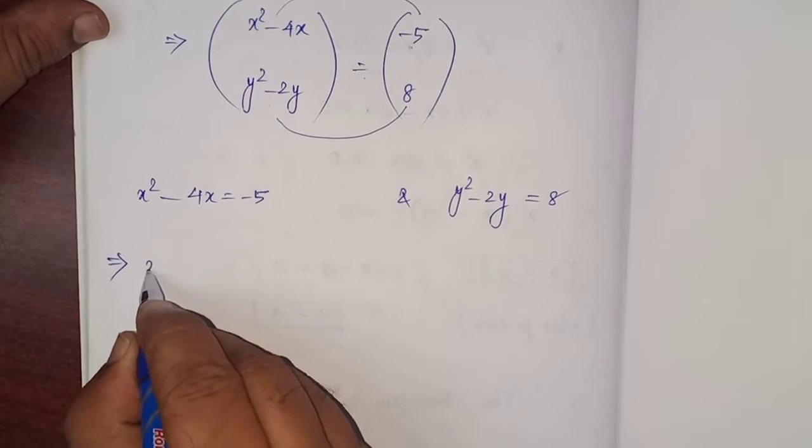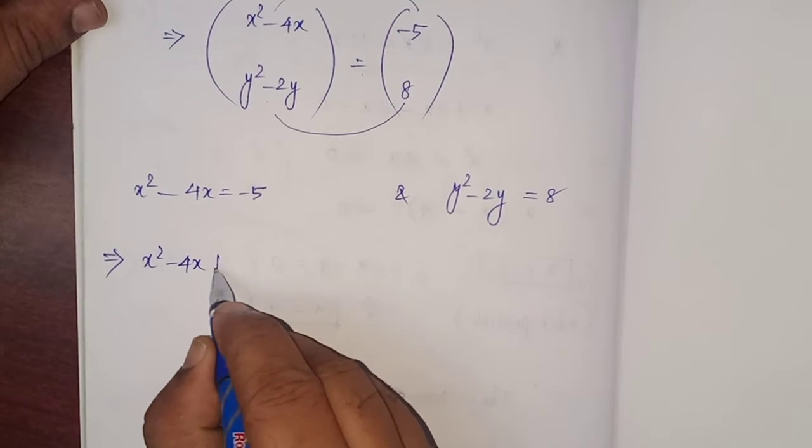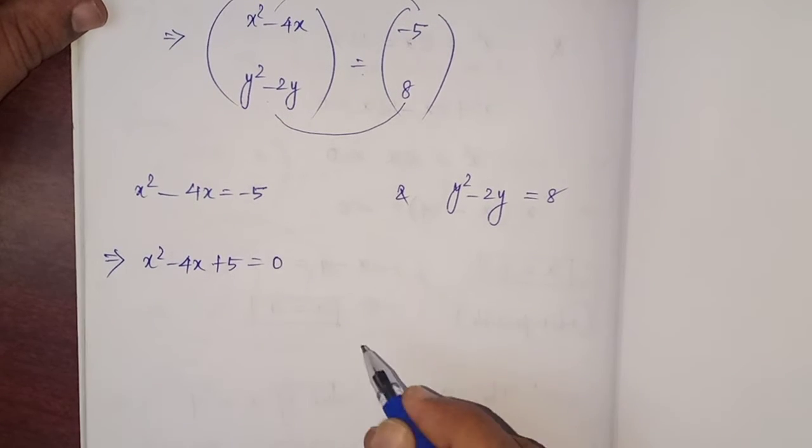Which implies x squared minus 4x, minus 5 comes left on side, plus 5 equals 0.